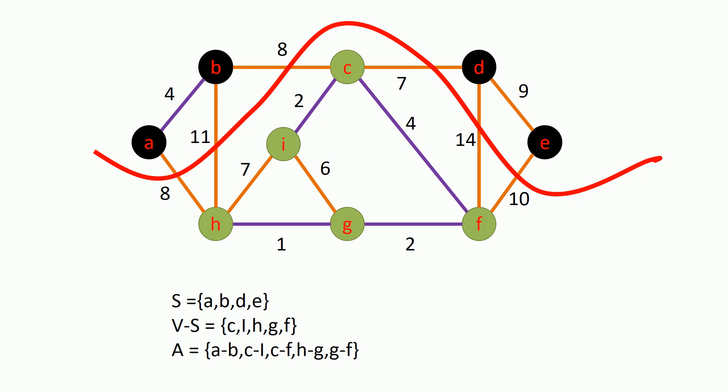So for this graph, edges between vertices A and H, B and H, B and C, C and D, D and F, and E and F — all these edges are crossing this cut. Out of these edges which cross the cut, the edge with minimum weight is called a light edge. So for this cut, the edge between vertex C and vertex D will be the light edge because it has the minimum weight value of 7 out of all the edges which cross the cut.